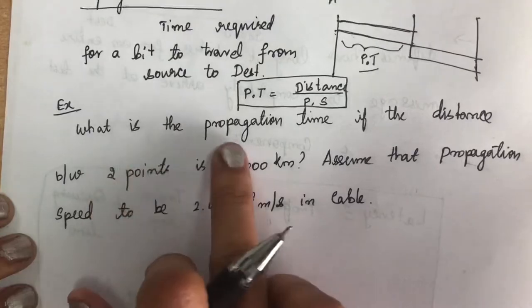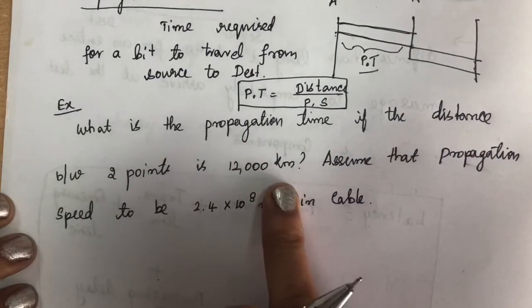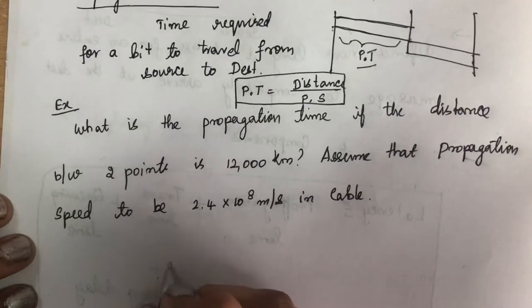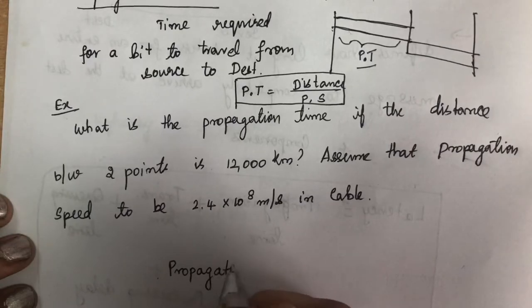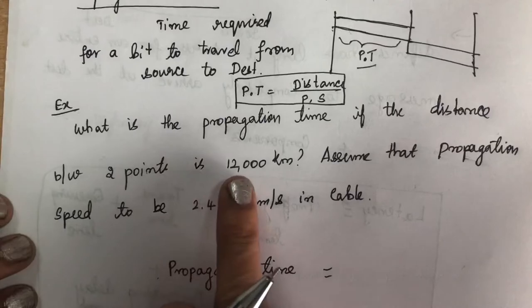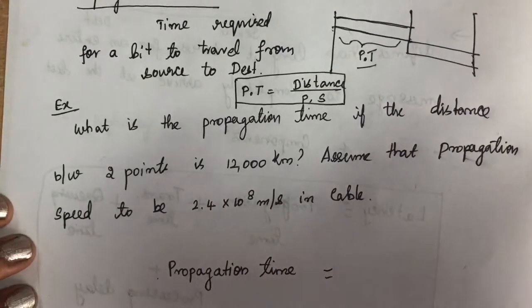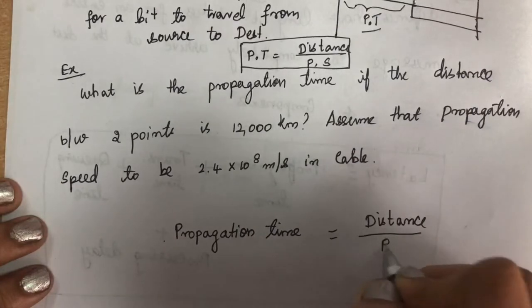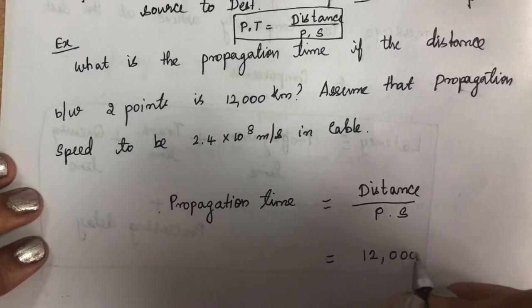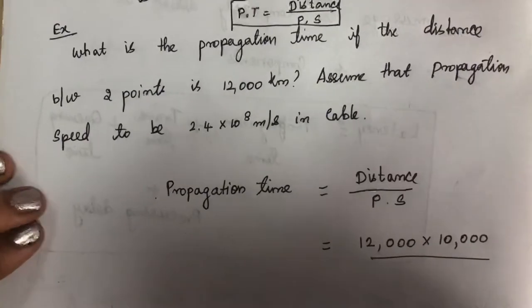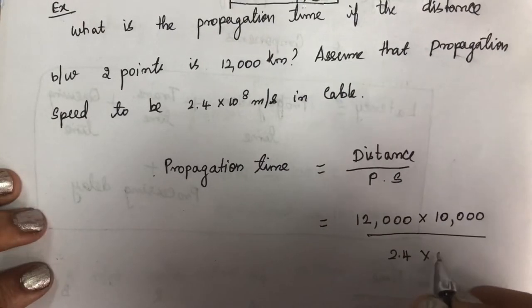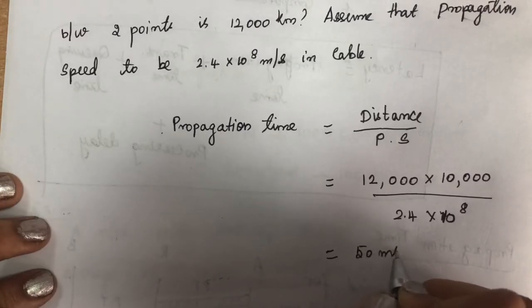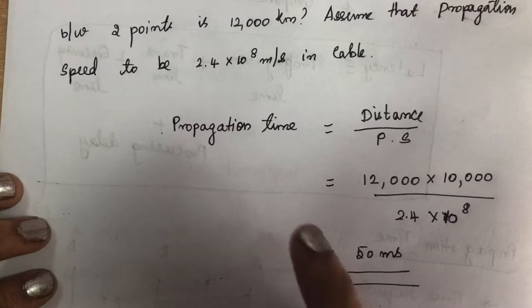Example: what is the propagation time if the distance between two points is 12,000 km, and the propagation speed is 2.4 × 10⁸ m/s in cable? Propagation time = (12,000 × 1000) ÷ (2.4 × 10⁸), which gives us 50 milliseconds. That is the time required for sending the message from one end to the other.